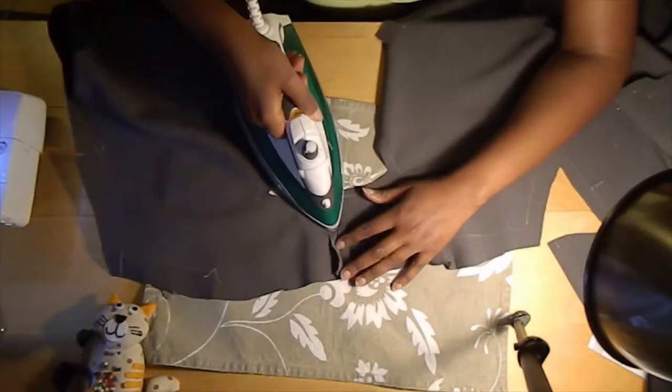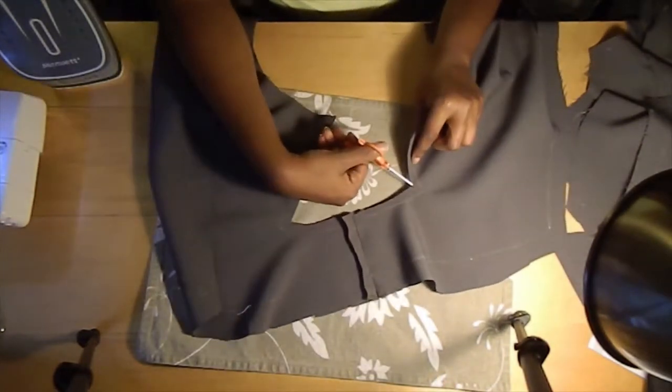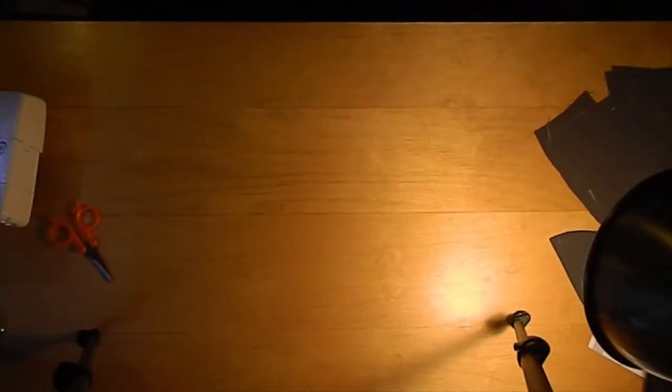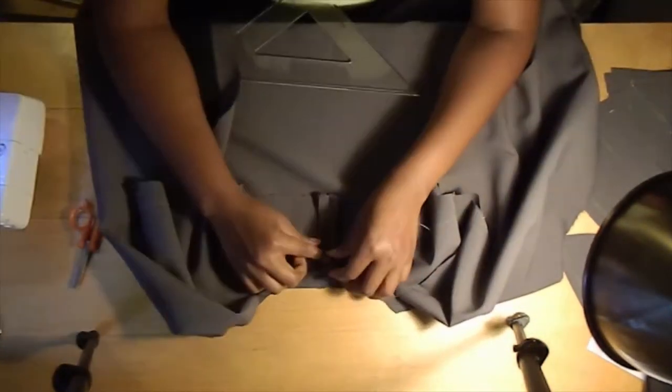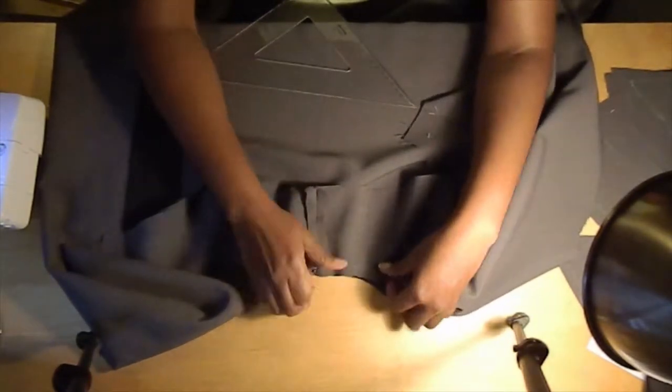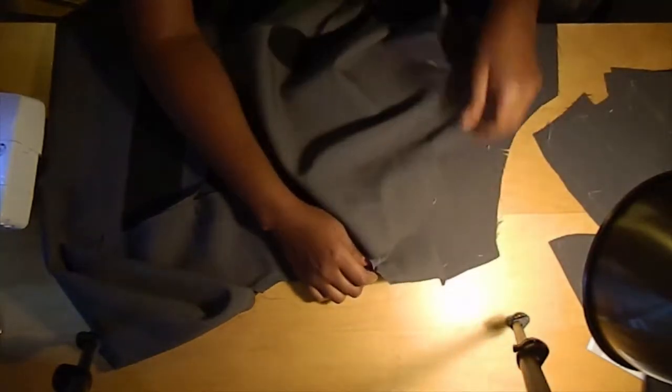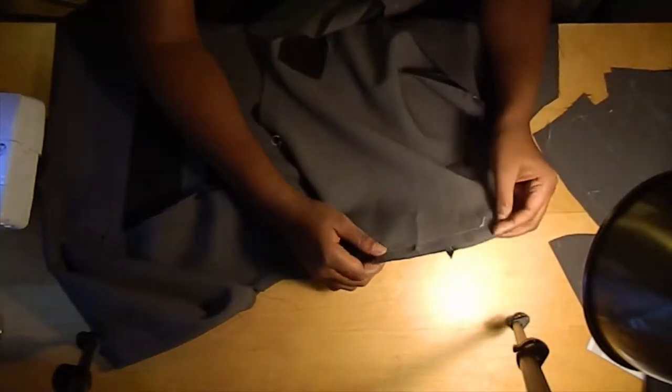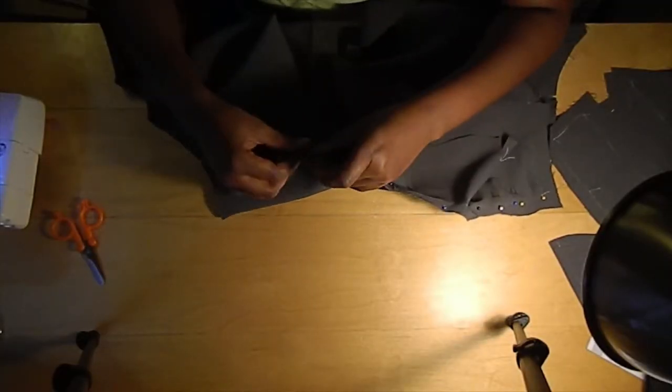This is where the rolled collar is going to be attached and then I'm going to snip my corners just to remove any bulk. Then I'm going to attach it to the back part and I'm going to pin this down. You can use whatever pins you have, office pins or pins with the heads.